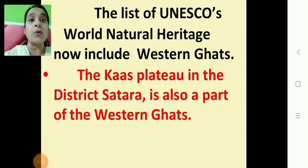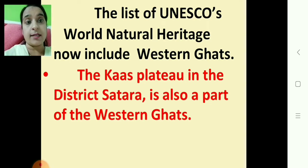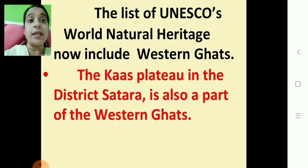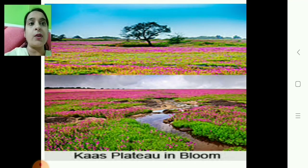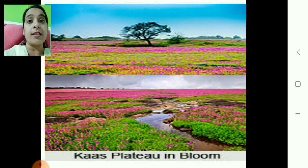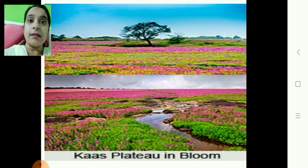The list of UNESCO's world natural heritage now includes the Western Ghats. The Kas Plateau in Satara district is also part of the Western Ghats and has been included in the world natural heritage by UNESCO. Here you can see a lot of wild flowers in colorful blooms and many different colored butterflies — it is so beautiful. Now it is included as a world heritage site.